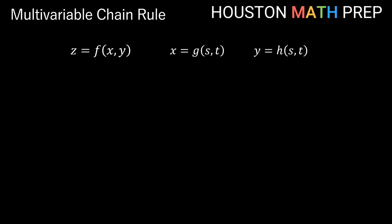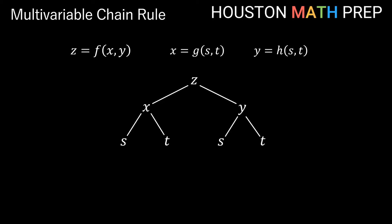Now let's look at a different case where z is a function of two variables, but x and y are also both functions of two variables s and t. Our tree diagram now has more branches near the bottom: z still forks to x and y, but now x and y also fork to both s and t. To find ∂z/∂t, we look at the bottom row — since it has more than one variable, the derivative of z with respect to t is a partial derivative, so we use the curly ∂z/∂t.